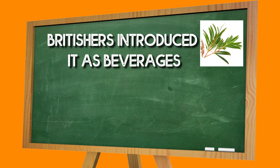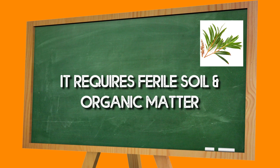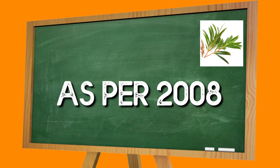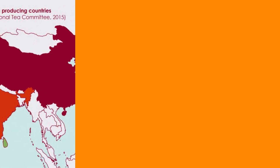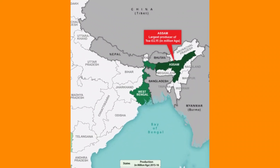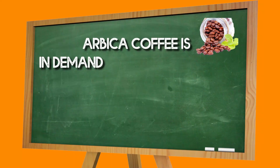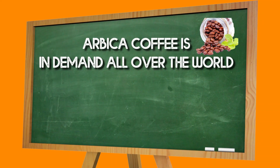Number 3 is Tea. Tea was initially introduced as a beverage crop in India by the British. Tea mainly grows in tropical and sub-tropical climate areas, and fertile soil with organic matter is required. As per 2008 data, India was the third largest producer of tea. Major tea producing states are Assam, West Bengal, and Kerala.